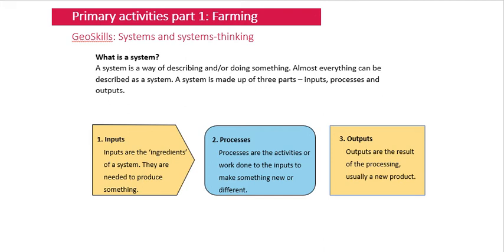We're going to look specifically at farming for the next week or so. Farming is done in a specific system: number one, inputs; number two, processes; and number three, outputs. Inputs are things you put into the farm — think of baking a cake, an input would be the ingredients.